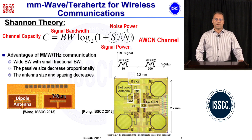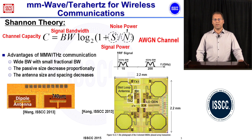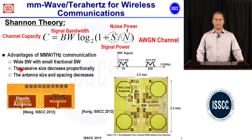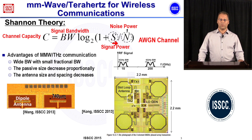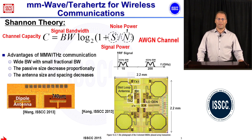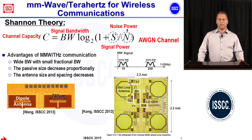The millimeter wave and terahertz frequency band for wireless communication enables very high data rate communications. This high data rate communication is inspired by the well-known channel capacity theory. According to channel theory, the channel capacity C is directly proportional to the signal bandwidth and has a logarithmic relationship with the signal-to-noise ratio. The use of very high carrier frequency around millimeter wave and terahertz frequency makes it possible to increase the bandwidth.